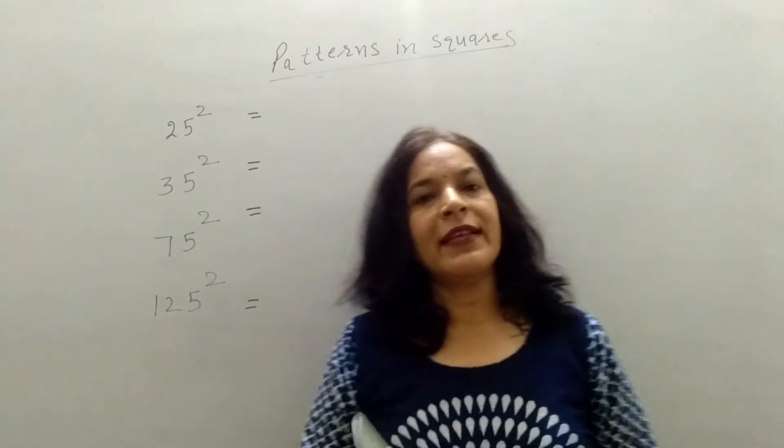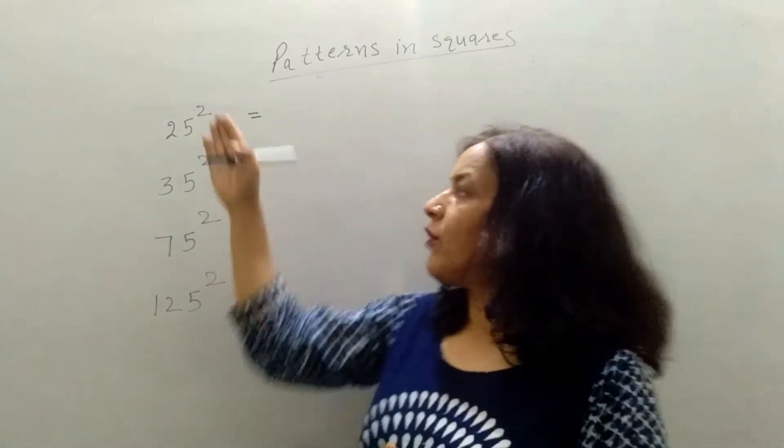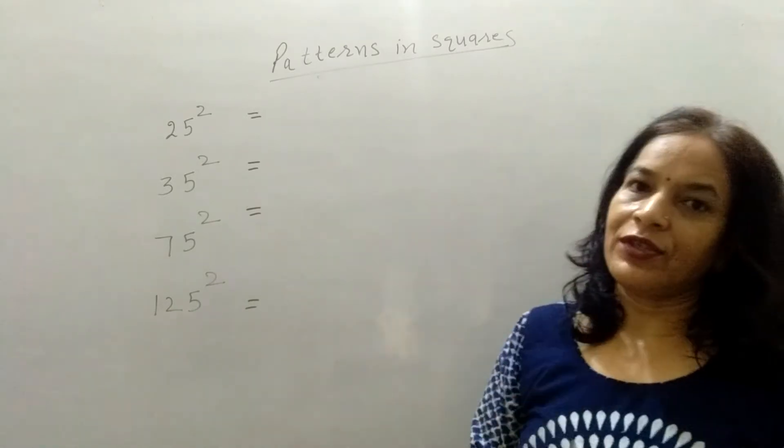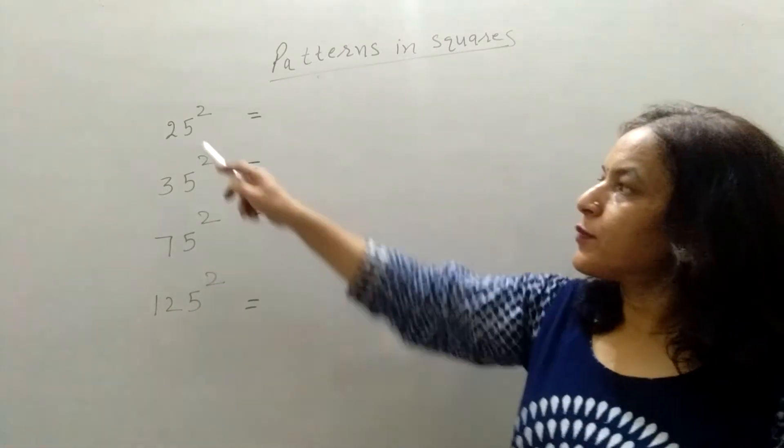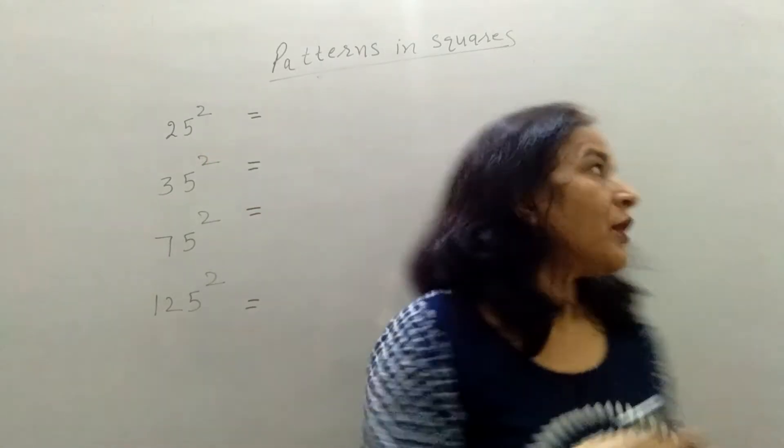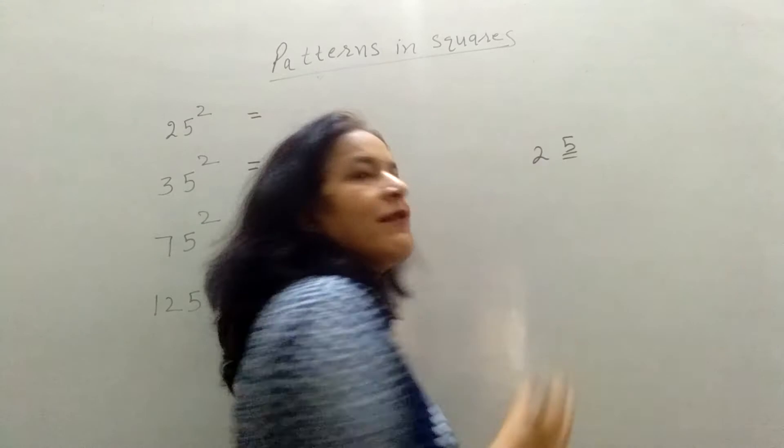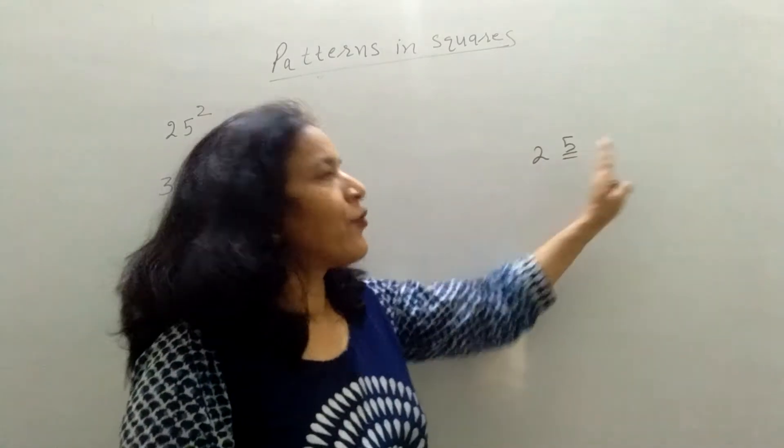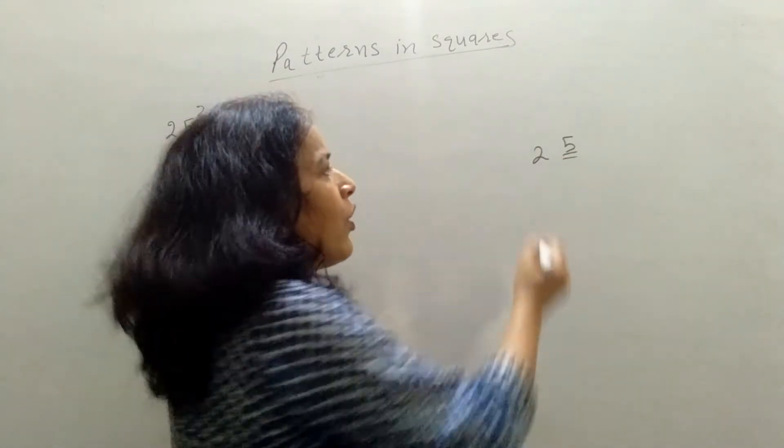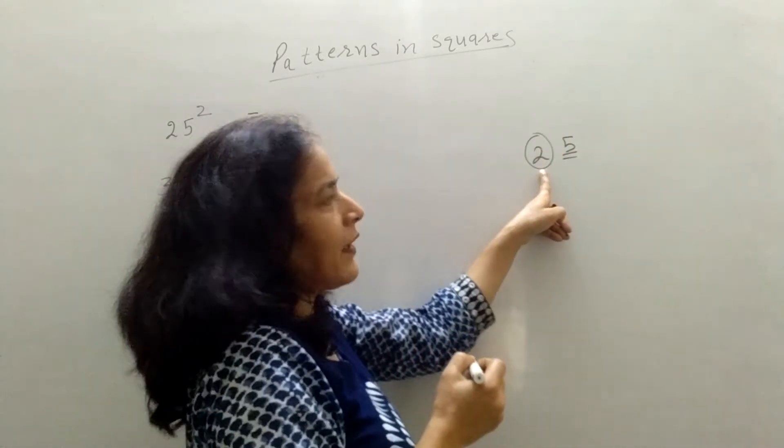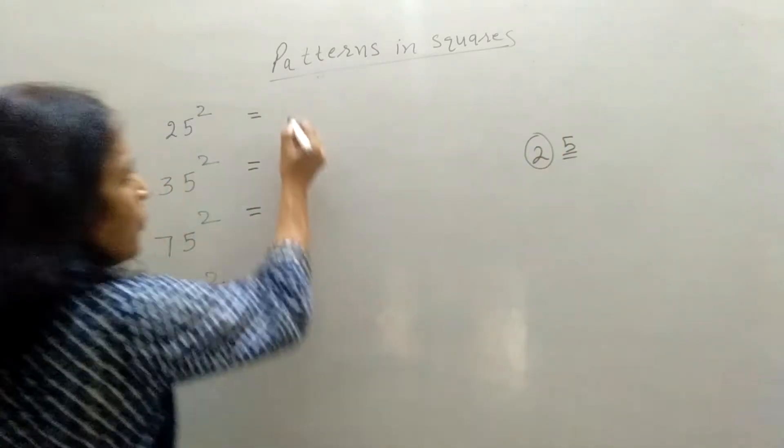Now we will discuss how to find the square of these types of numbers easily without any calculation. What will you do? Suppose 25 square. You have your 25. 5 is the unit digit. Set 5 to one side. Now what will you take? 2. Then what will you do?